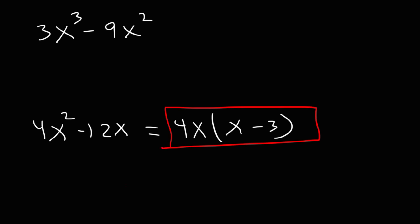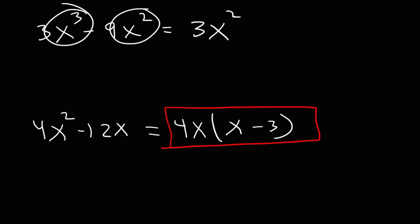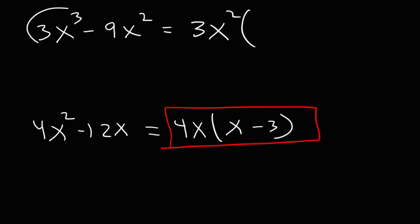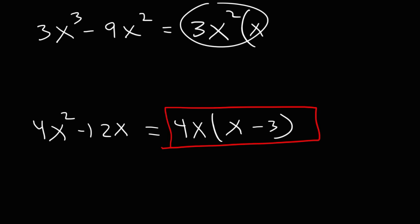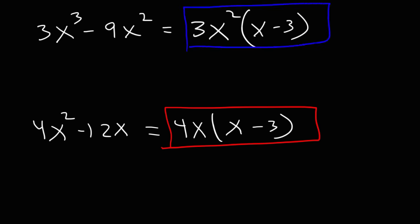For the first one, we also take out the GCF, which is 3x squared. Each term has at least two x variables so we can take out x squared. 3x cubed divided by 3x squared is x, and negative 9x squared divided by 3x squared is minus 3. So that's it for those two examples.